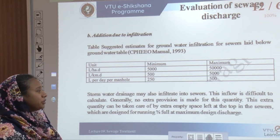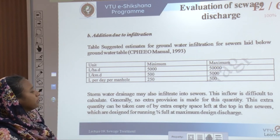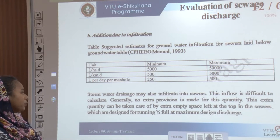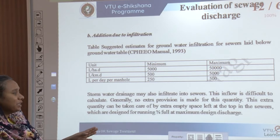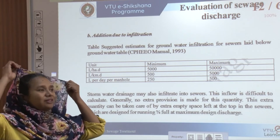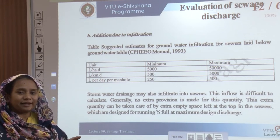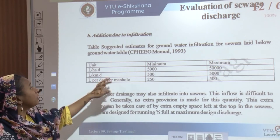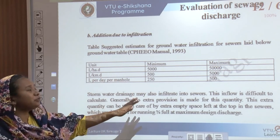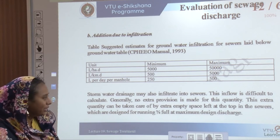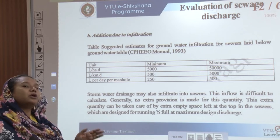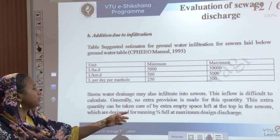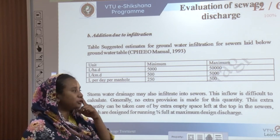Stormwater drainage may also infiltrate into the services, and this flow is difficult to calculate. Generally, no extra provision is made for this quantity; instead, it is accommodated by leaving extra empty space at the top of sewers, which are designed to run at three-fourths full at maximum design discharge. When infiltration adds to the sewer lines, it should be accommodated within the same empty space left at the top rather than requiring a larger sewer section.